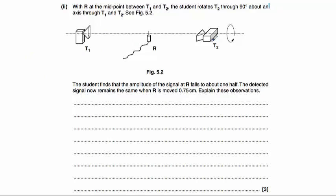In part two, we have the same arrangement but T2's transmitter has been rotated through 90 degrees. The student finds the amplitude of the signal at the midpoint has fallen to about one half, and the detected signal now stays the same when R is moved 0.75 centimetres. The fact that the signal doesn't change tells us there's no longer a standing wave.